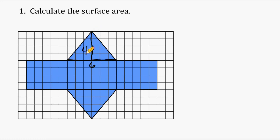One thing we should notice about this triangle is if we were to take the one at the bottom, which is congruent or identical to this triangle, we could slide it up here to make a parallelogram. So we can treat both of these triangles as one parallelogram. To find the area of a parallelogram, we just do base times height. So 6 times 4 gives us an area of 24.